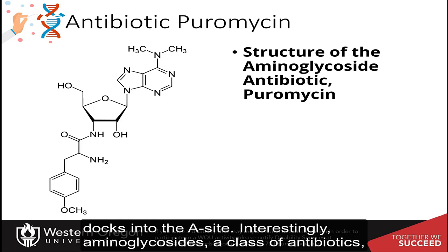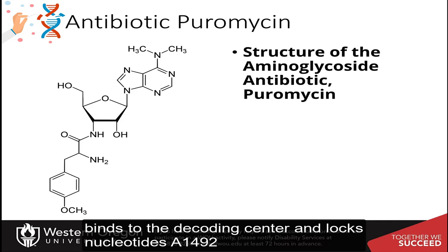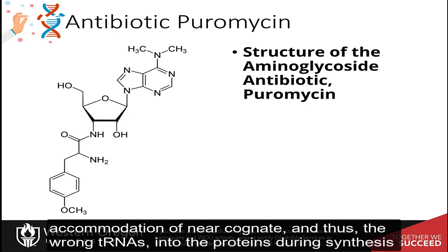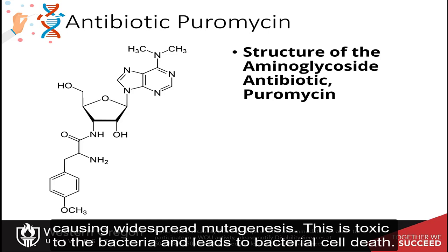Interestingly, aminoglycosides, a class of antibiotics, bind to the decoding center and lock nucleotides A1492 and A1493 in the flipped-out conformation. In this way, aminoglycosides promote the accommodation of near-cognate and thus the wrong tRNAs into the proteins during synthesis, causing widespread mutagenesis. This is toxic to the bacteria and leads to bacterial cell death.